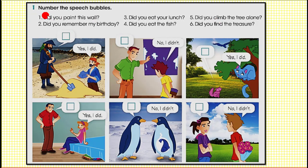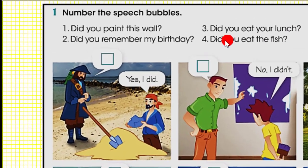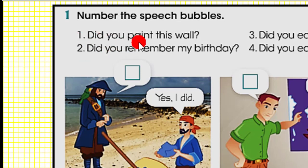In activity number one, we have to number the speech bubbles. There are six situations here; each situation is carried out in the past. Cada figura fue desarrollada en el pasado. Dice que tenemos que enumerar las burbujitas — lo que dicen las personas — from number one until number six. Each question is asking you directly — imagínate que te están preguntando a ti esas seis preguntas, porque están diciendo 'did you.'